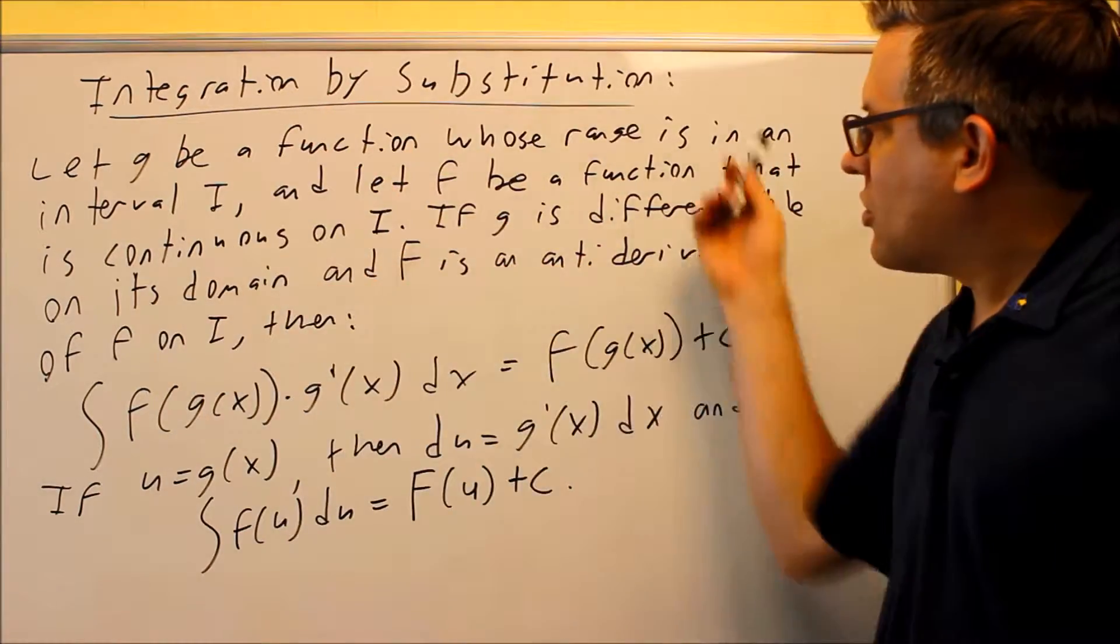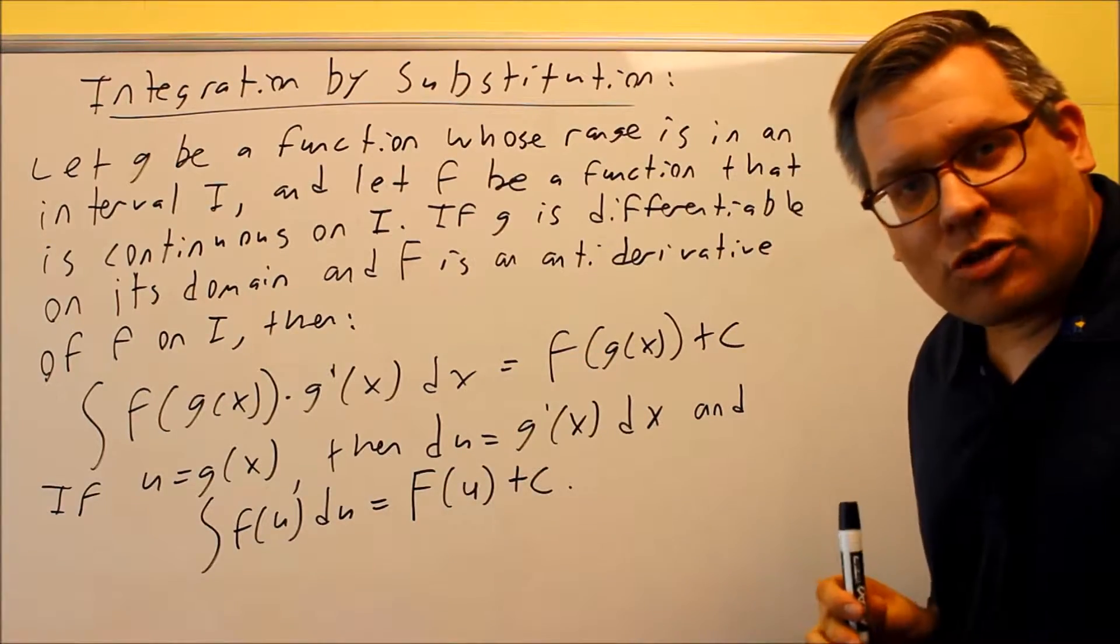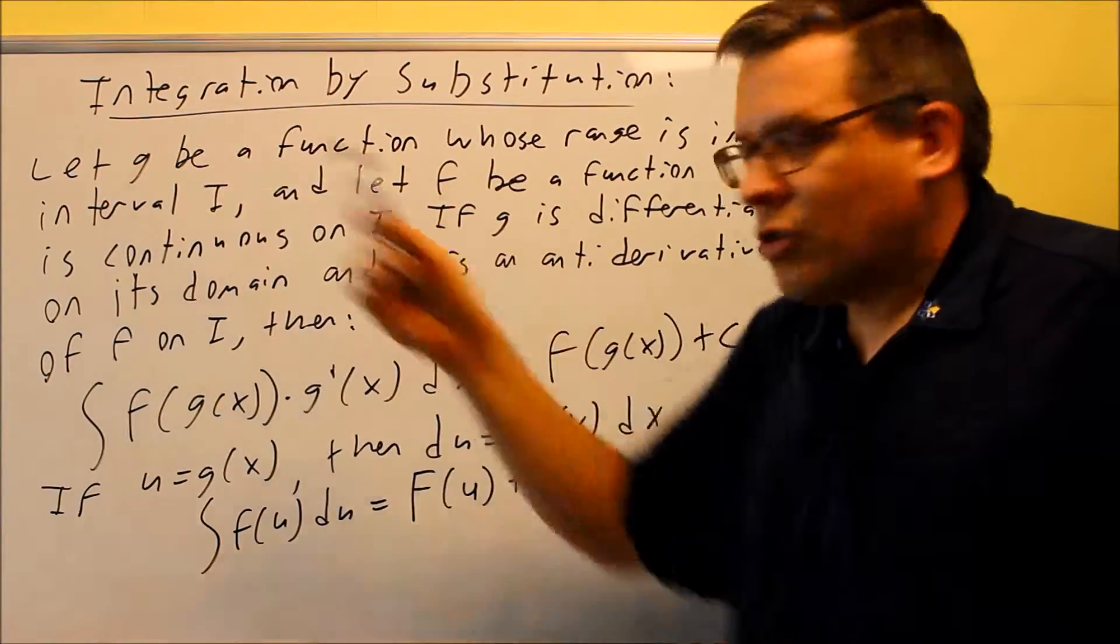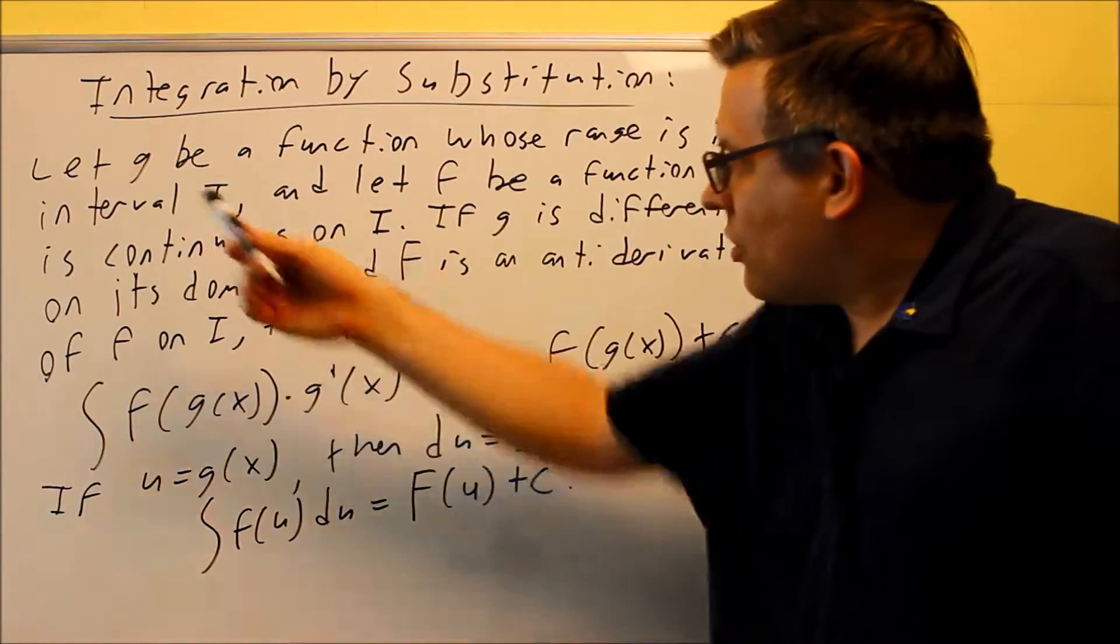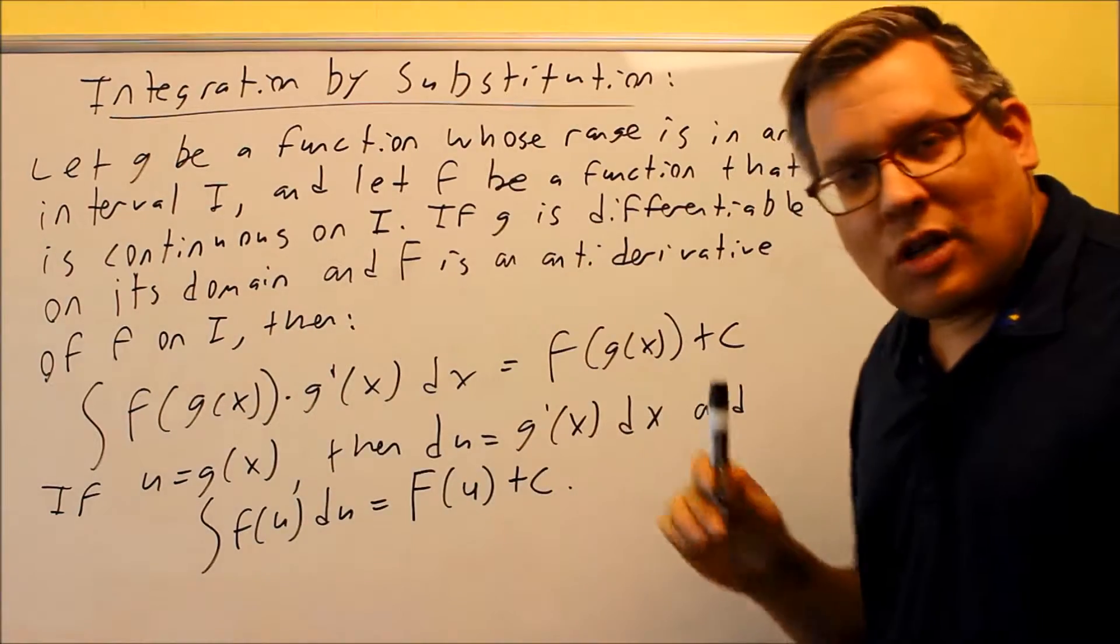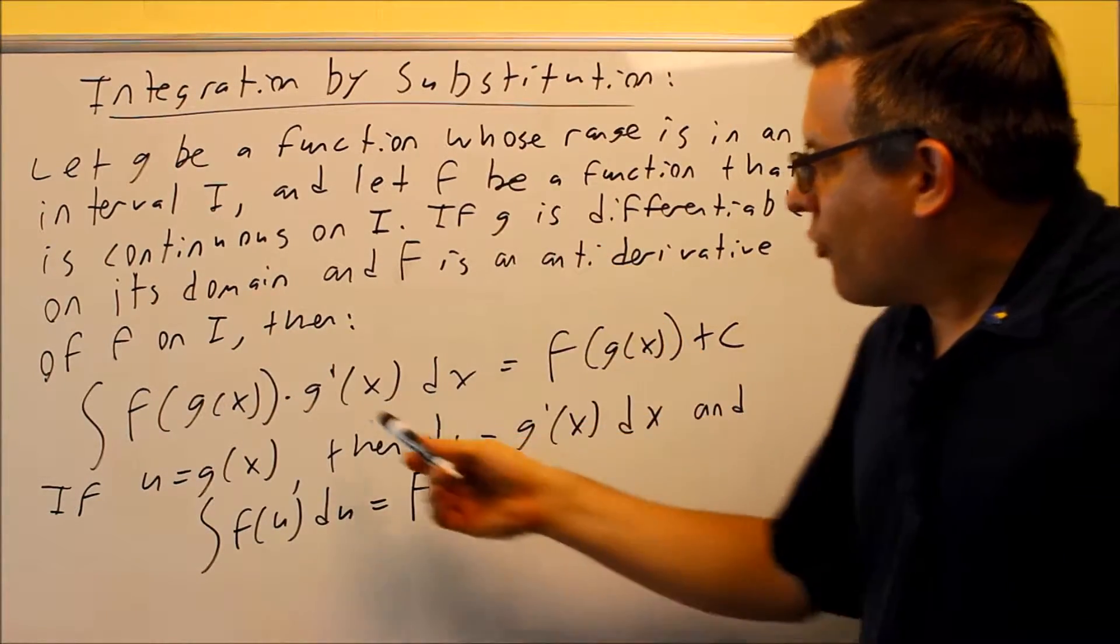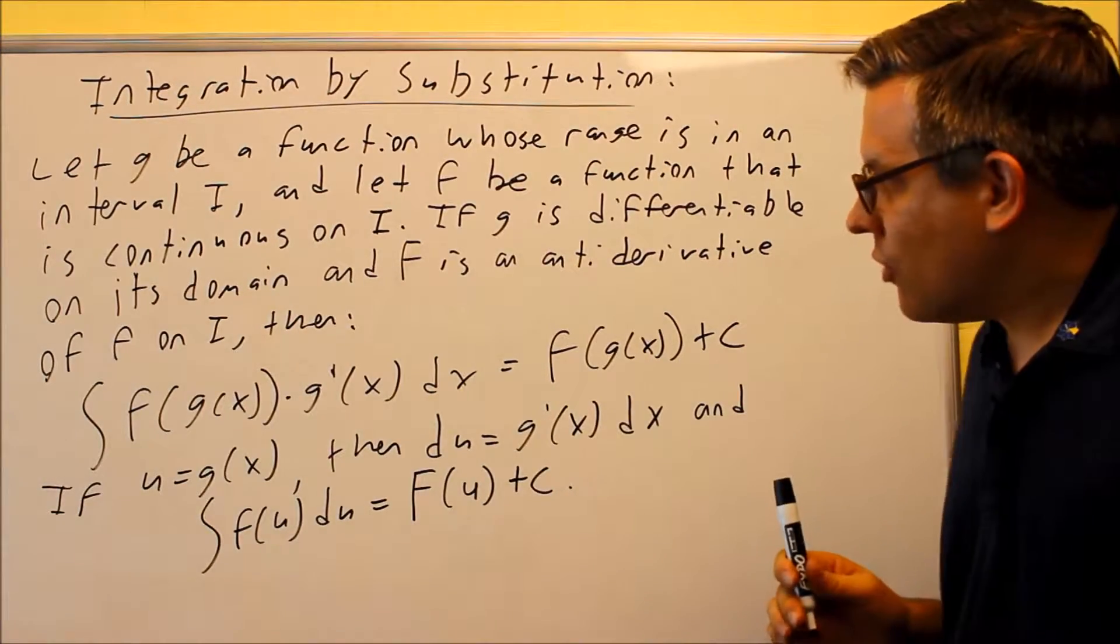This information here just tells you what has to be in place in order for you to be able to do integration by substitution. So your g, your inside function, has got to have a range, an interval I, and lowercase f is a function that's continuous on that same interval. And then your g has to be differentiable in that domain, capital letter F is going to be antiderivative.